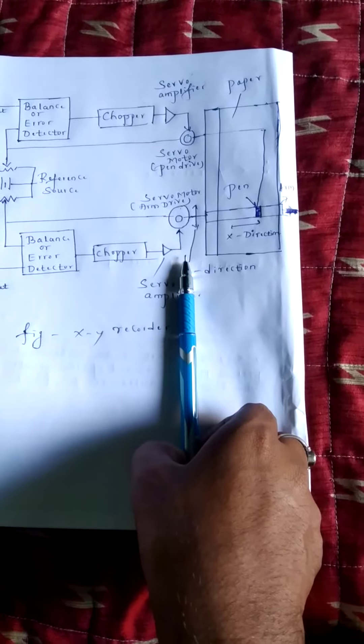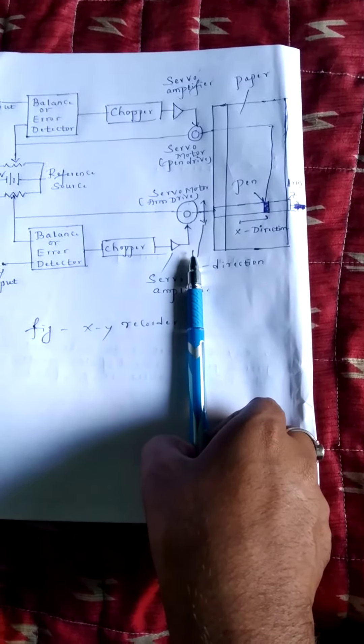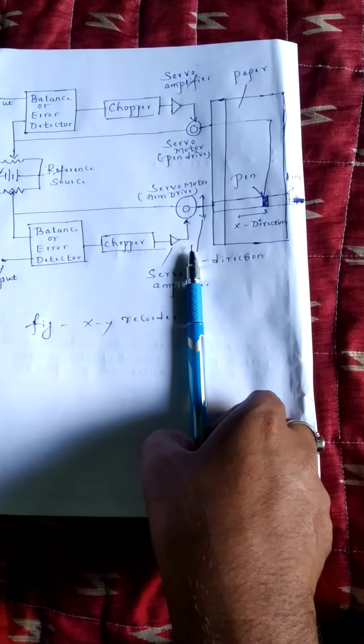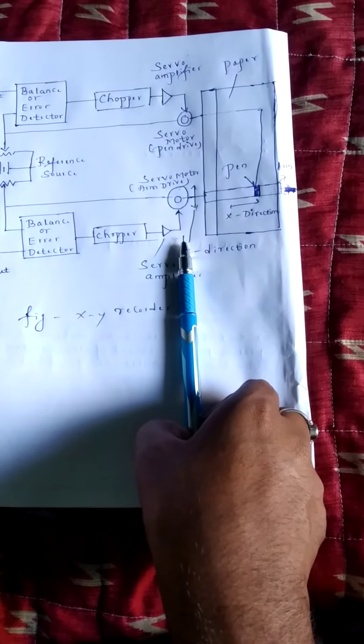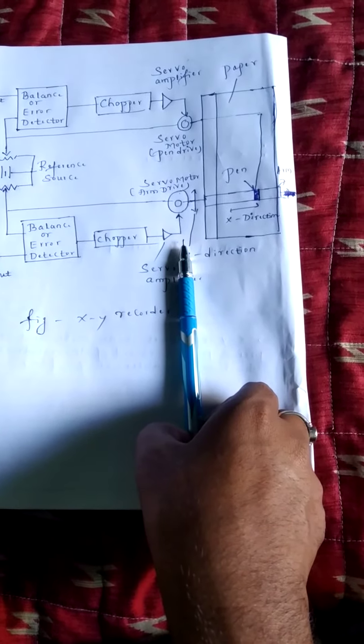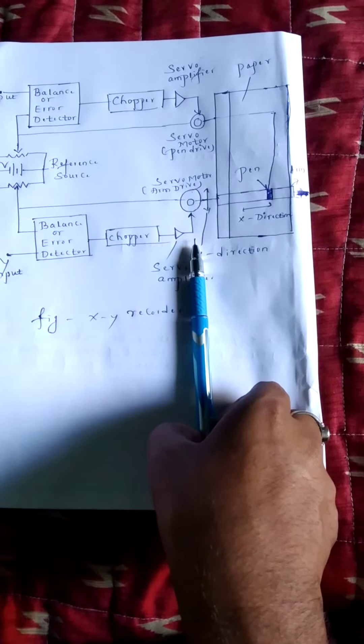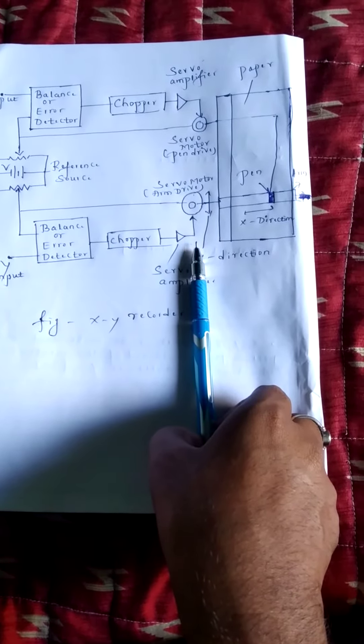Hence, in order to reduce the error, thereby bringing the system to balance. Hence, as the input signal being recorded varies, the pen or arm tries to hold the system in balance producing a record on the paper.